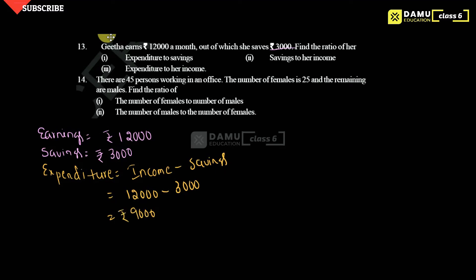So this is the total expenditure. First one, what they are asked here is expenditure to savings. So what is expenditure here — 9,000. What is the savings here — 3,000. So 9,000 is to 3,000 — 3 threes are 9, 3 ones are 3 — that is 3 is to 1.